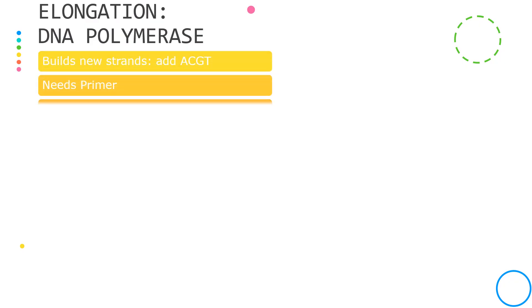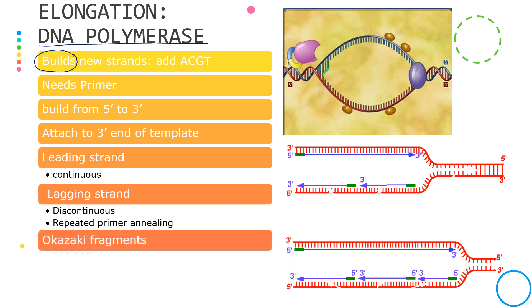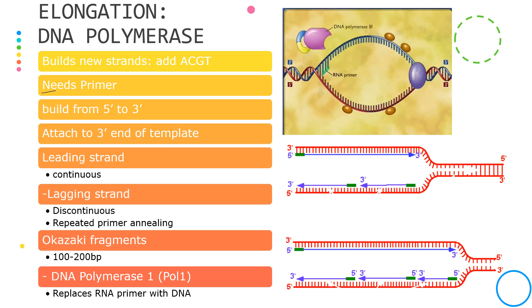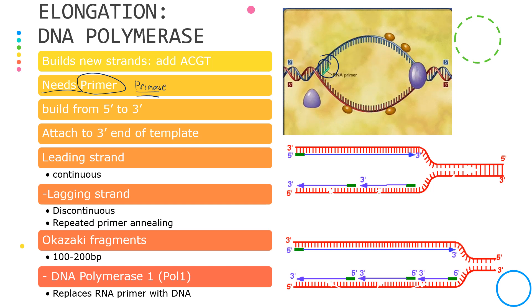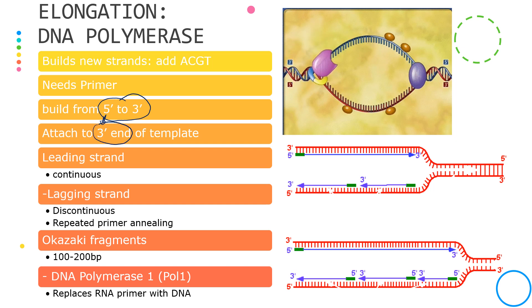The next step uses DNA polymerase, referred to as the builder in DNA replication, because it builds the new strand by adding nucleotides — A, C, G, or T. DNA polymerase needs a primer to start, which has already been provided by primase. Another limitation is that DNA polymerase can only build in the 5' to 3' direction, meaning it can only attach to the 3' end of the template.